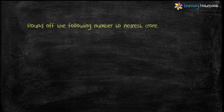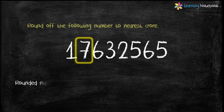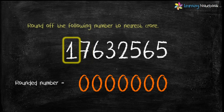Now let's see the last example: round off the following number to the nearest crore. The steps remain the same except now we will look at the 10 lakhs place. Here the 10 lakhs digit is 7, which is greater than 5. So first replace 7632565 by 0, then increase the crore digit, which is 1, by 1 — 1 plus 1 equals 2. Therefore the rounded number is 2 crores.